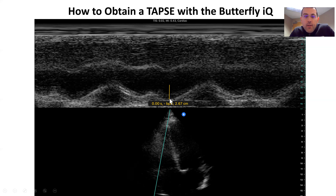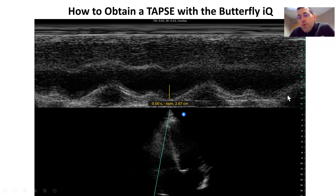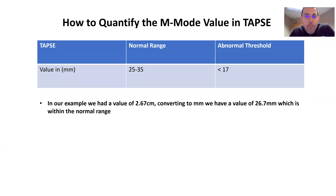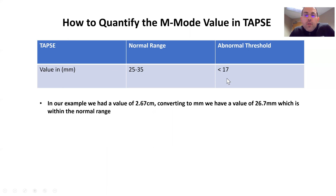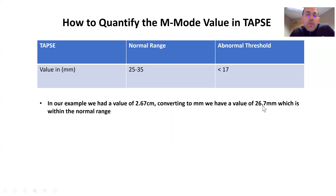So we put our calipers on. We first put our first caliper down at the trough, come across to a peak, take that across, and put the other part of our calipers up there, and we get a number. In this particular instance, we get a number of 2.67. What do we do with that number? Unlike MAPSE where the calculation can be more complicated with equations, here it's more common to look at the raw number. We simply convert it to millimeters. The normal range is between 25 and 35 millimeters, and an abnormal threshold is less than 17 millimeters. In our example, we had a value of 2.67 centimeters, which converts to 26.7 millimeters — and that is within the normal range.